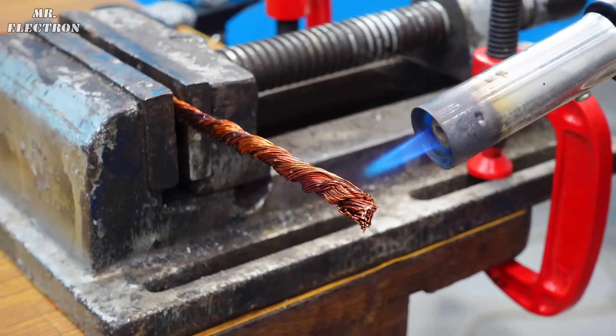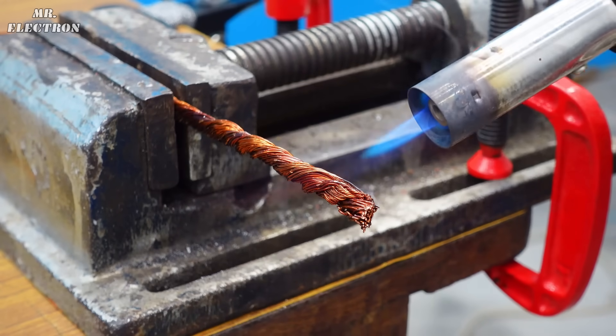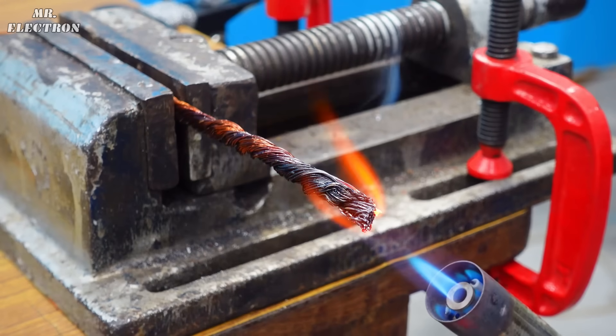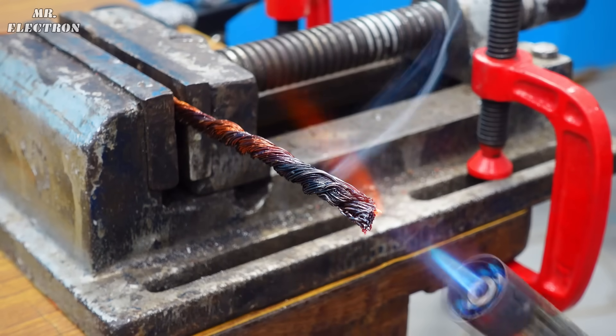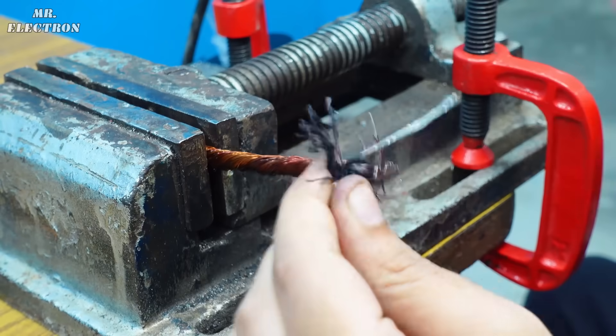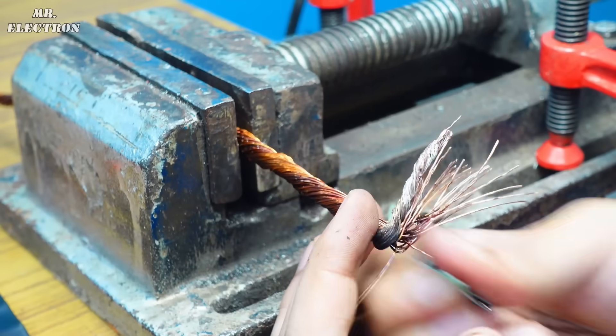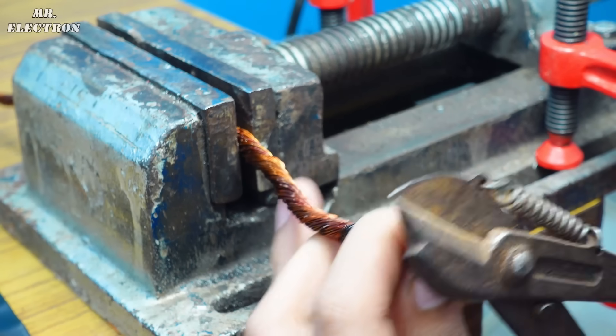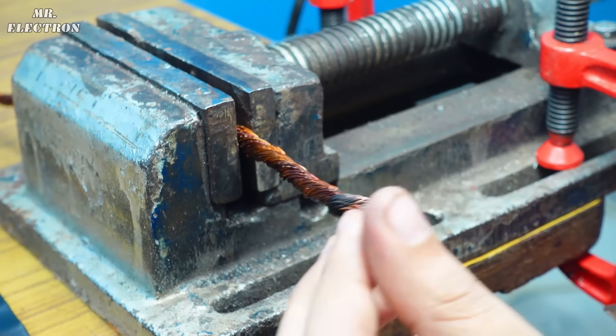Next comes the insulation removal part as shown. Since these are enameled copper wires with high temperature insulation, I'm using this butane gas which is going to melt away the enamel, leaving behind only its residue which needs to be cleaned properly with the help of sandpaper. After completing this, simply trim the ends as shown.